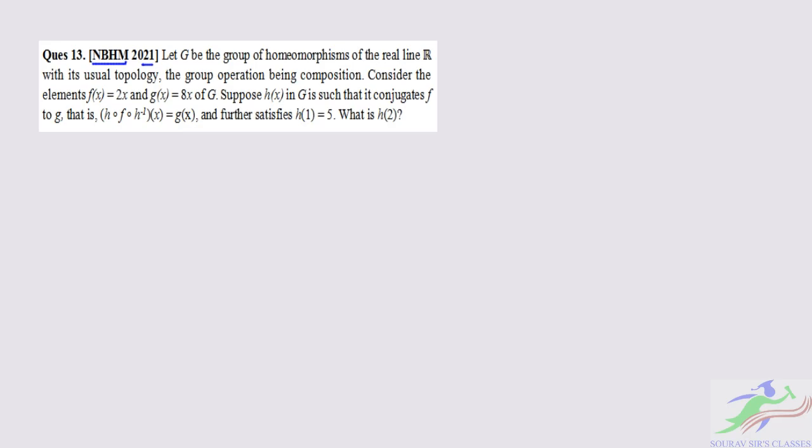Question number 13 says let G be the group of homeomorphisms of the real line R with its usual topology, the group operation being composition. Consider the elements f(x)=2x and g(x)=8x of G. Suppose h(x) in G is such that it conjugates f to g, that is h∘f∘h⁻¹(x)=g(x), and further satisfies h(1)=5. We have to find what is h(2).